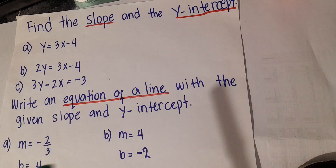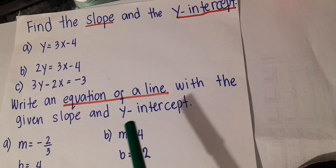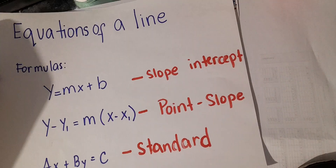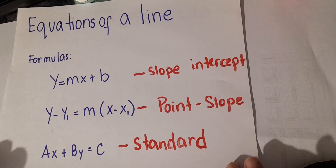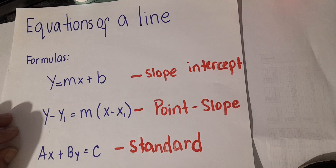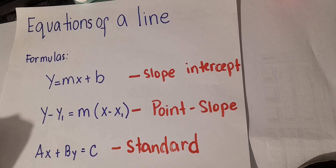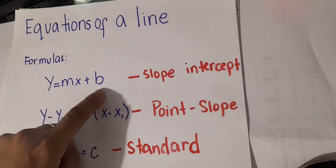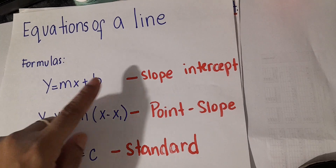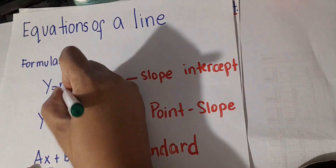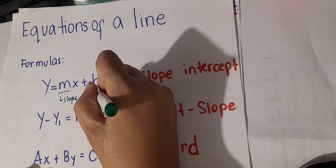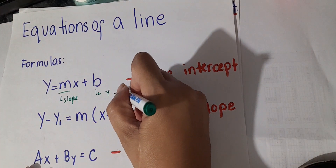Before we solve or find the slope and the y-intercept of the given equation, we need to know the different kinds of equations or formulas. Here are the equations of a line. I will be discussing the first three formulas. The first one is the slope-intercept formula: y is equal to mx plus b. The m here is the slope and the b here is the y-intercept.